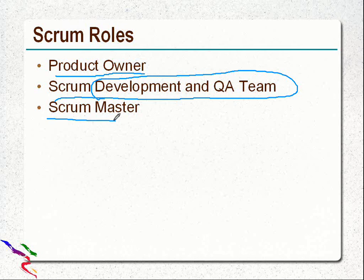The important role is that of the Scrum Master. The Scrum Master is responsible for making sure the team is as productive as possible. The Scrum Master does this by helping the team use the Scrum processes properly and by removing all the hurdles and impediments that come in the progress of the sprint. The Scrum Master also protects the team from outside environmental influences.